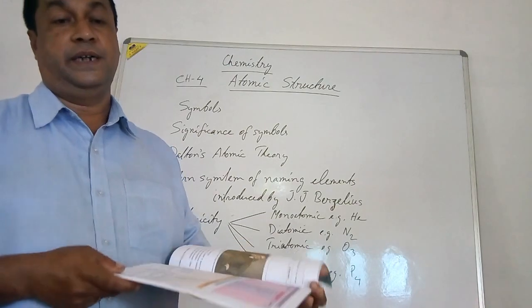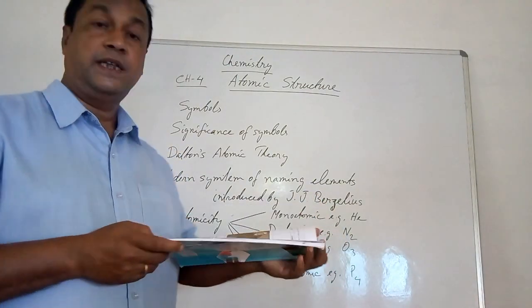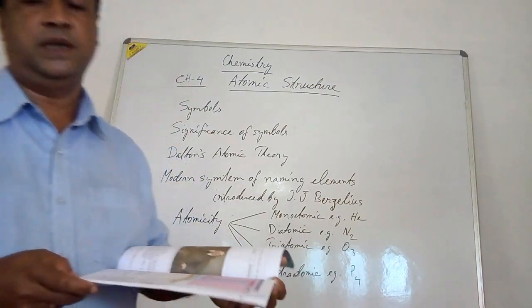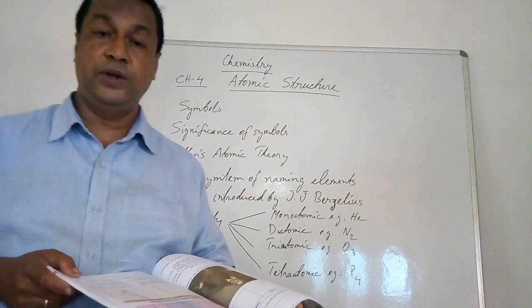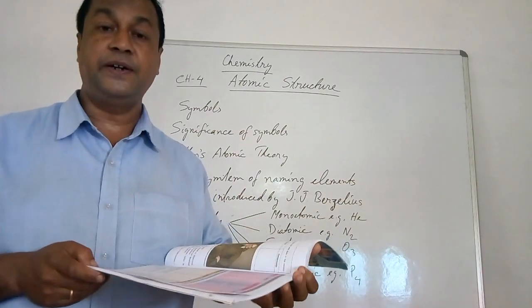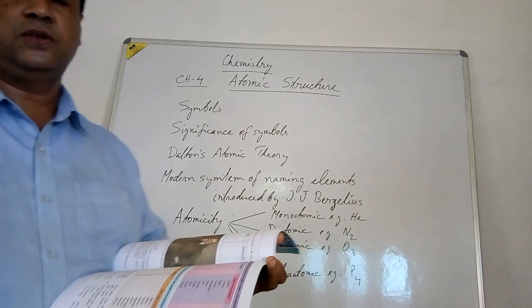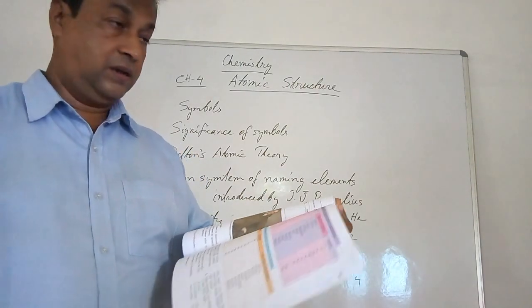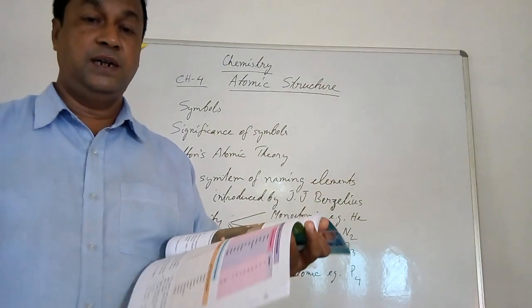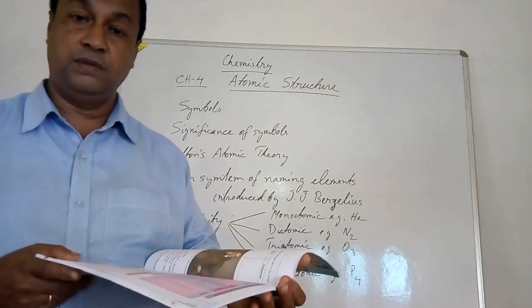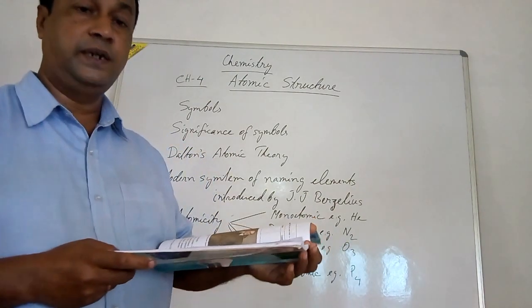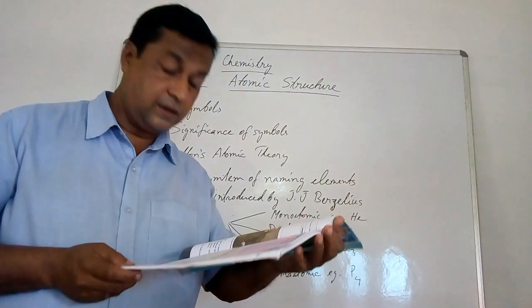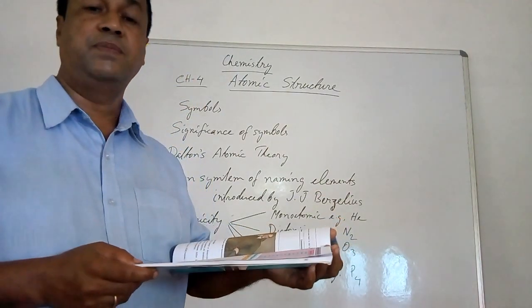Another method is that some elements are given symbols based on their Latin names. For example, sodium's Latin name is natrium, so its symbol is Na. Similarly, potassium is given the symbol K, and other elements also have symbols derived from their Latin names.